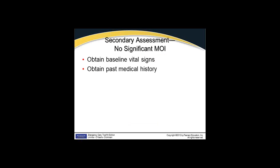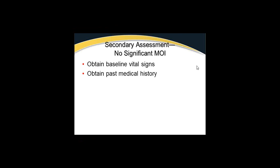For secondary assessment with no significant mechanism of injury, we get a baseline set of vital signs and obtain a past medical history. If we hadn't gathered the full set of vital signs, we should do that at some point during our assessment, then obtain the past medical history.